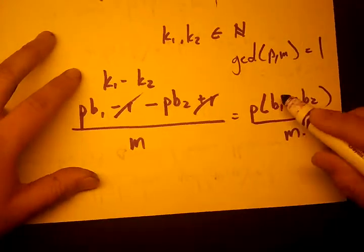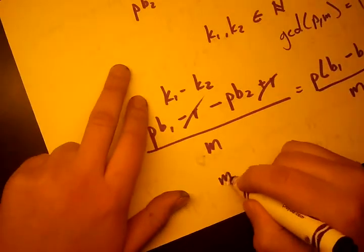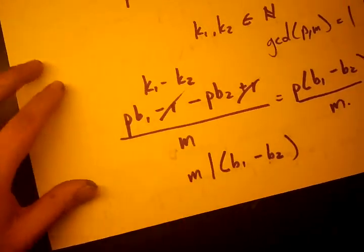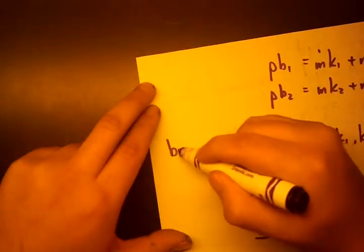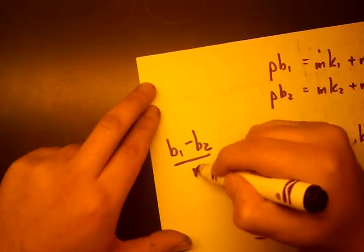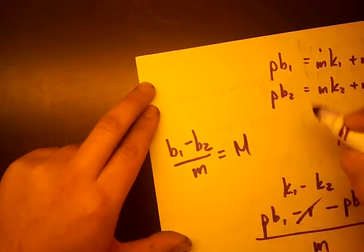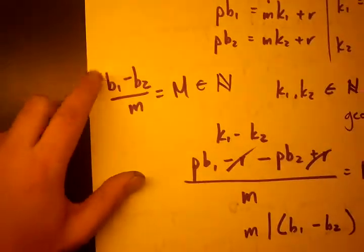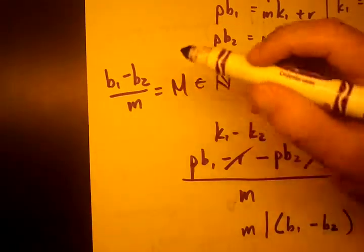That means that M has no choice but to divide B1 minus B2. We say M divides B1 minus B2. What does that imply? That implies that B1 minus B2 over M equals some U, which is an element of the natural numbers. That has to be an integer, basically.